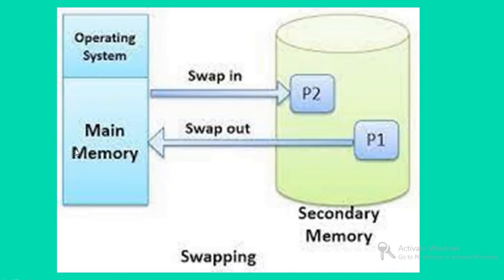So this is the diagram. This is the operating system. In the operating system, this is the main memory and here is the secondary memory. Here are the processes: first P1 and P2. The process P1 here is temporarily inactive, so we swap it out to the secondary memory. From secondary memory, when the process is needed for execution, it is swapped back into the main memory.